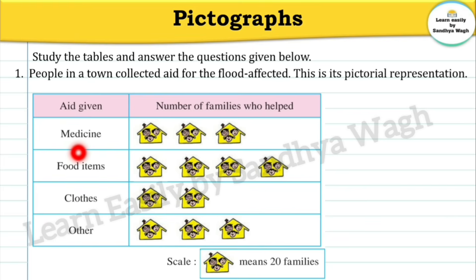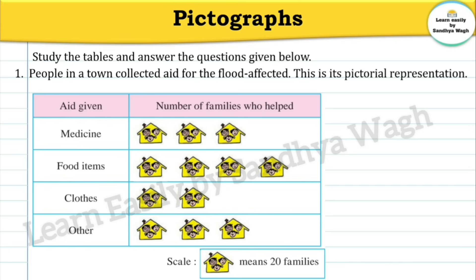Some families gave medicines, some families gave food items, some families gave clothes, and some families gave other aid. Now, the most important thing when solving pictograph questions is to check the scale. The scale given here is: one house means 20 families.